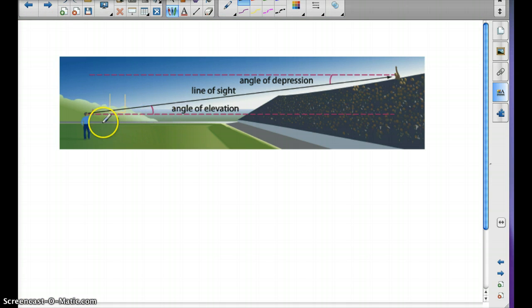So, notice the angle of elevation we have this horizontal line and the person, the observer, is looking above. So, this would be the angle of elevation. And then here, the angle of depression, we have the horizontal line here and we're looking down. It goes down the line of sight. So, this would be the angle of depression.